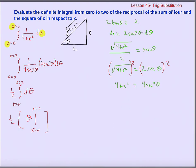What I need to do is turn theta back into x. Looking back at my triangle, this angle has a tangent of x over 2. So the tangent of theta equals x over 2, which means if I want the angle by itself, theta equals the arc tangent of x over 2.